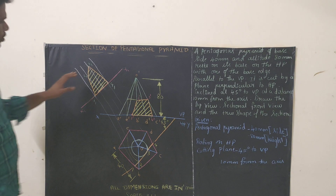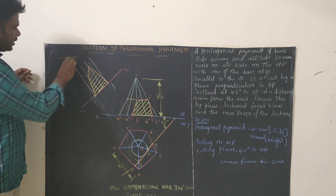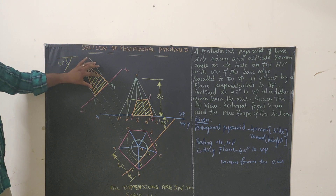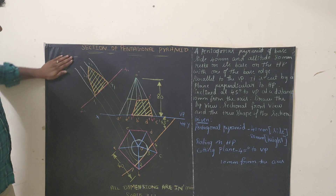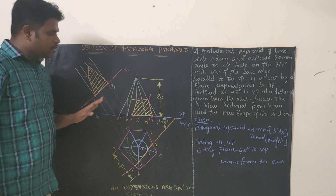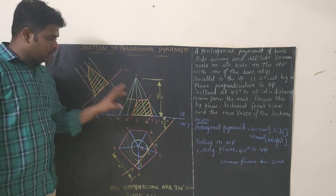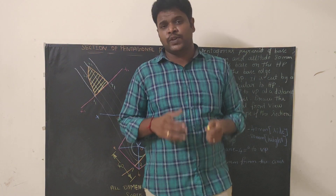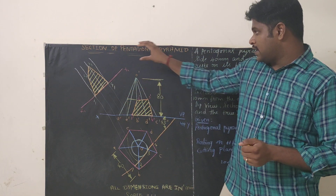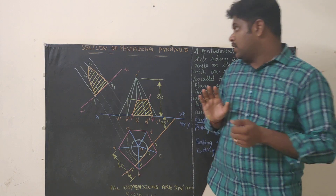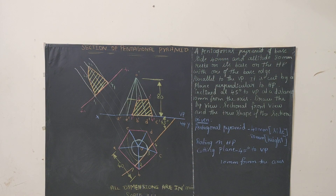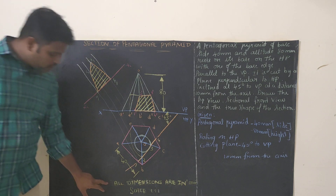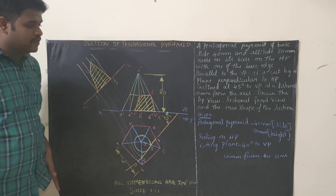The last step is hatching the true shape: draw a reference line, take 45 degrees with it, and draw hatching with 45-degree angle and equal spacing, then rub off the construction lines. We have now completed the entire problem. This is the true shape of section, this is the sectional front view, this is the cutting plane, and this is the top view and front view. The title should be written as 'Sectional Front View of Pentagonal Pyramid' with a circle around the drawing number, and at the bottom write two lines: 'All dimensions are in mm' and 'Scale 1:1'. Height of text is 5 mm.